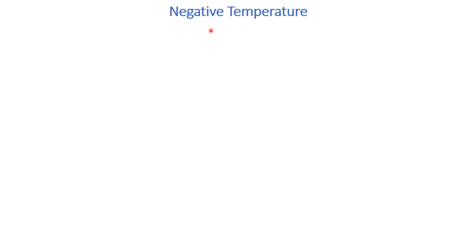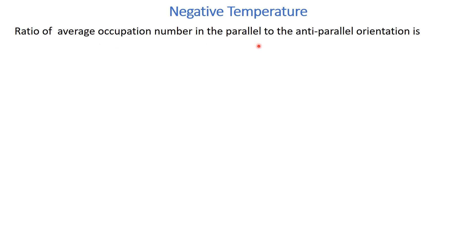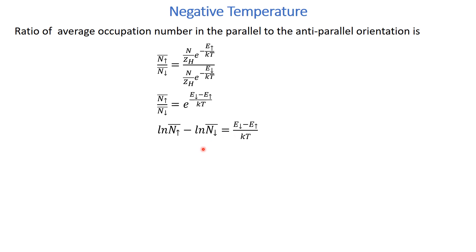There is another important aspect of negative temperature associated with this lecture. When we talk about Kelvin temperature, we never talk about negative temperature. However, in the case of the centigrade or Fahrenheit scale, we do have negative temperature values. The ratio of the average occupation number in parallel and anti-parallel orientation is given by a relation, and taking the logarithm of both sides, we can find the value of T, giving equation number 9.